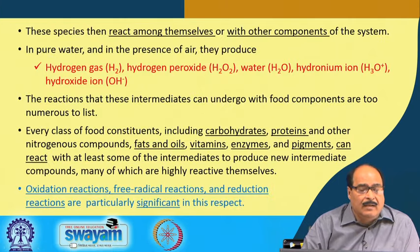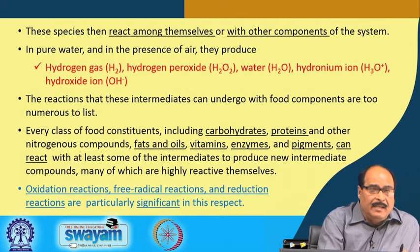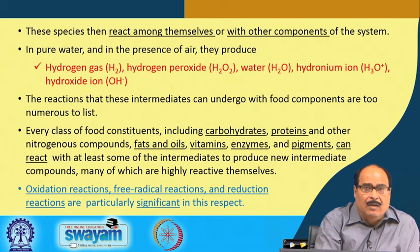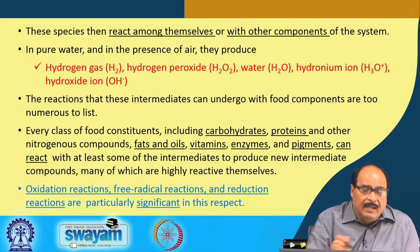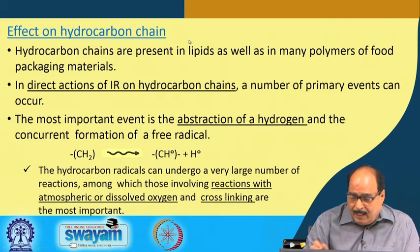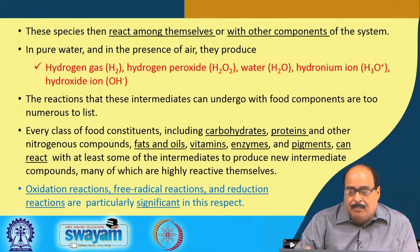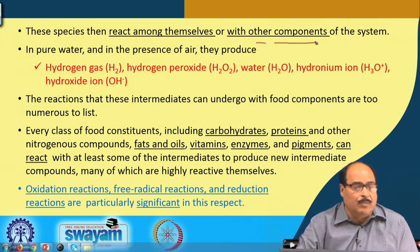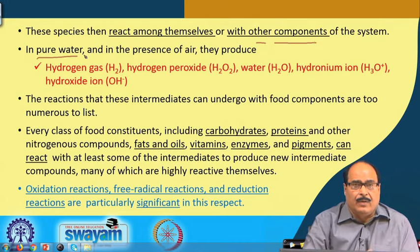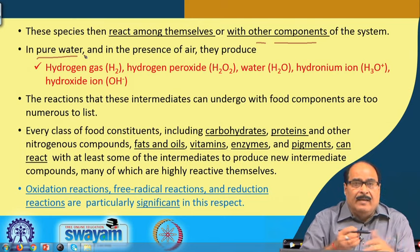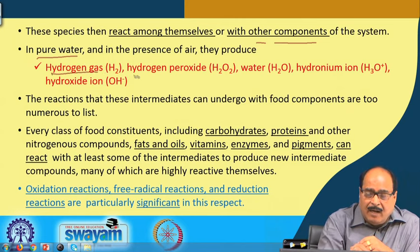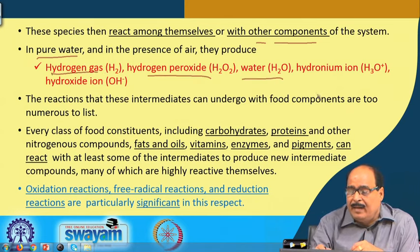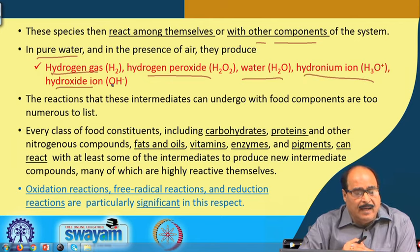These intermediate species formed due to exposure to ionizing radiations can react among themselves as well as with other food components. In pure water where only water molecules are present, interactions among these intermediates may result in the formation of hydrogen gas, hydrogen peroxide, water molecules again, hydronium ions, and hydroxide ions.